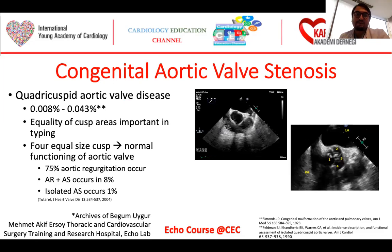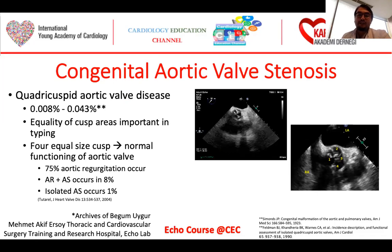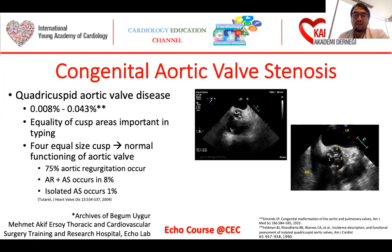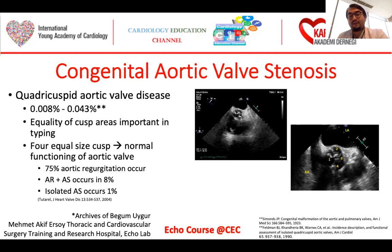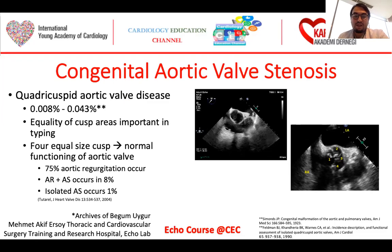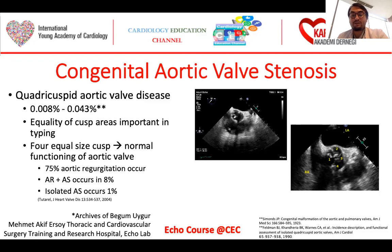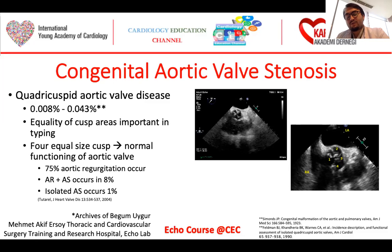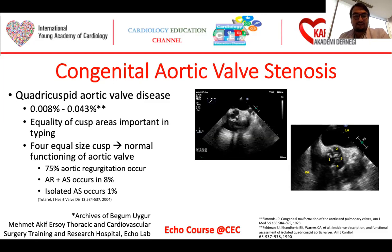Another congenital aortic valve stenosis cause is quadricuspid aortic valve disease. This is even rarer than the unicuspid type. An important point is the equality of cusp areas. If there are equal areas in the cusps, this means more normal function. However, if there is inequality between cusp areas, that may cause early complications in the aortic valve or aorta. If cusps are of more equal size, there is mostly normal function early in life, but afterwards we see aortic regurgitation in about 75% of patients. Isolated aortic stenosis occurs in about 1% of these patients; mostly we see aortic regurgitation that later progresses to aortic stenosis.